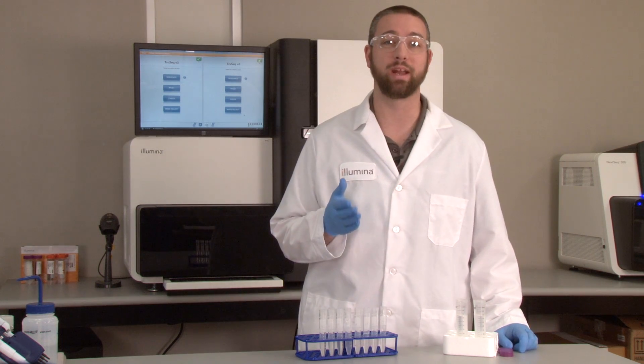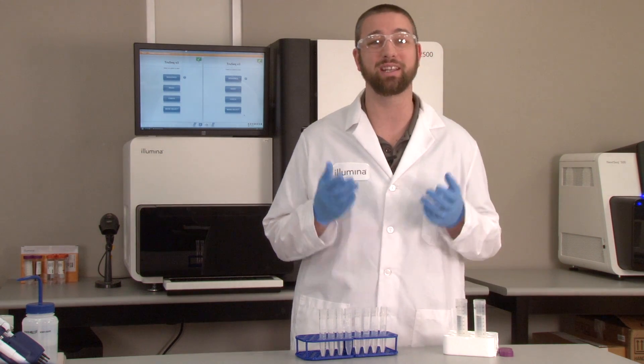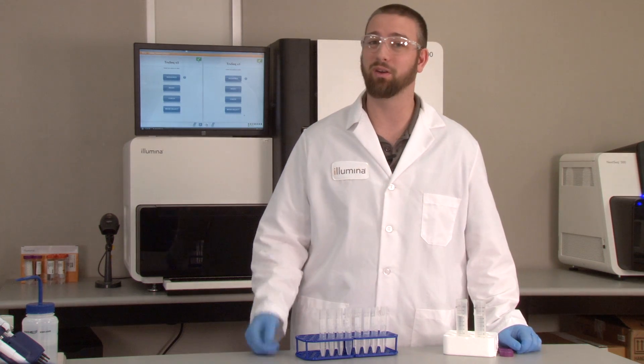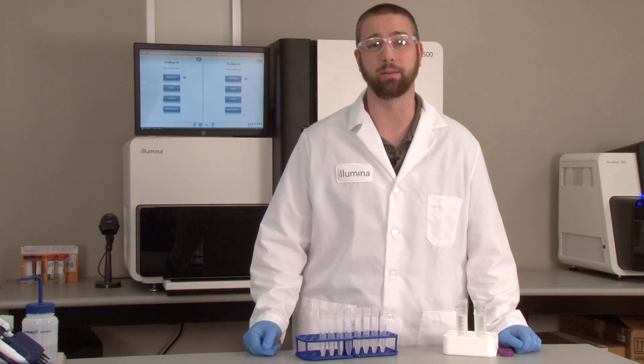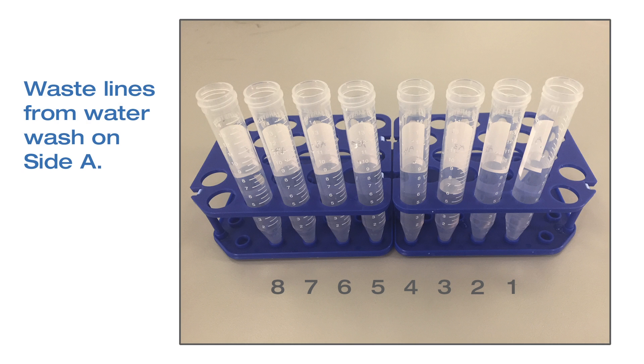The actual collected waste volume should be within 10% of the expected volumes. If in doubt, contact your local service and support team or technical support. To illustrate this point, on the right are 8 tubes that captured the waste from a water wash on side A. One tube, which was collecting waste from lane number 3, is significantly lower than the other 7 tubes and would clearly indicate poor flow.